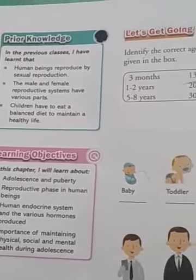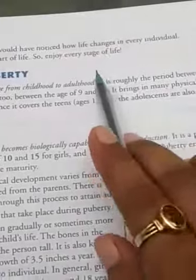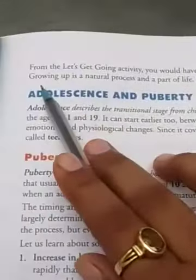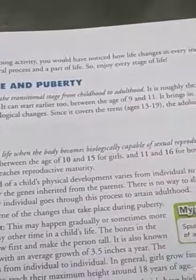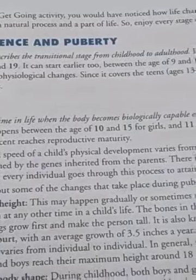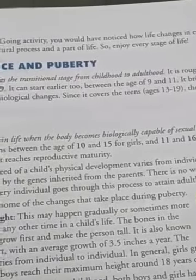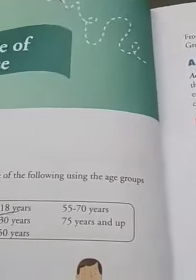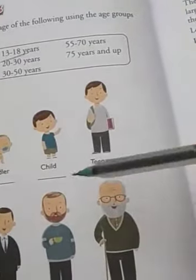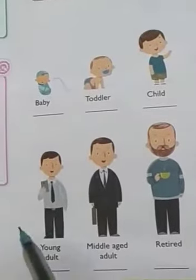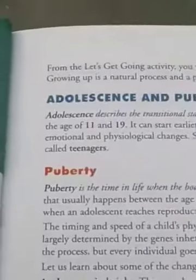From the last activity you would have noticed that life changes in every individual. Growing up is a natural process and a part of life, so enjoy every stage of life. Every age has its own importance. As shown previously, life stages start with a baby, then toddler, then child, then teenage — which is the age we are reading about — then young adult, middle-aged adult, retired person, and elderly.